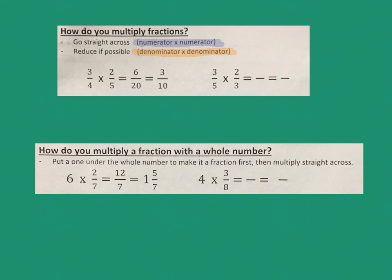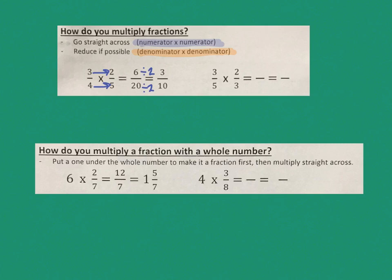There's one example already done for you on your paper. The first one says 3 fourths times 2 fifths. If I go straight across, 3 times 2 is 6, and then 4 times 5 is 20. So I'm going to draw a line showing that I'm going straight across. 3 times 2 is 6, and 4 times 5 is 20. Then, 6 over 20 — both of these numbers are even, so I could divide them both by 2 to simplify. I'm going to fill in divide by 2, divide by 2, and that's how I get my final answer, which is 3 over 10.